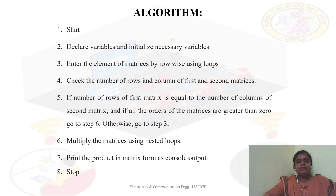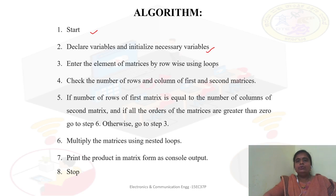Here is the algorithm. We start, then we declare the variables. We have two matrices, so for matrix 1 we declare M and N for rows and columns, and for matrix 2 we declare P and Q. Since it is a two-dimensional matrix, we need two variables to access the elements of each matrix. We may also need one more variable to show the result. All these variables will be declared in the second step.